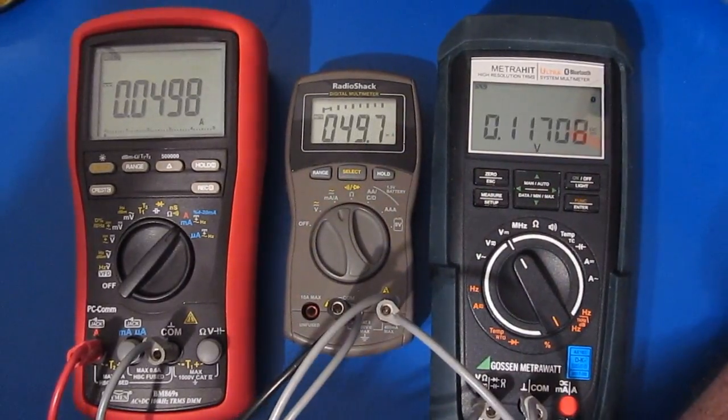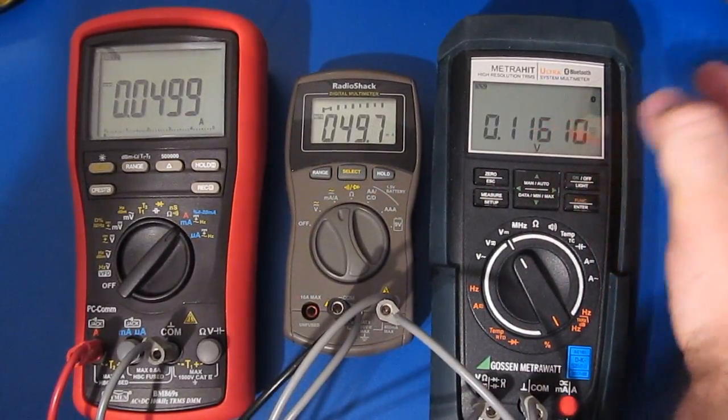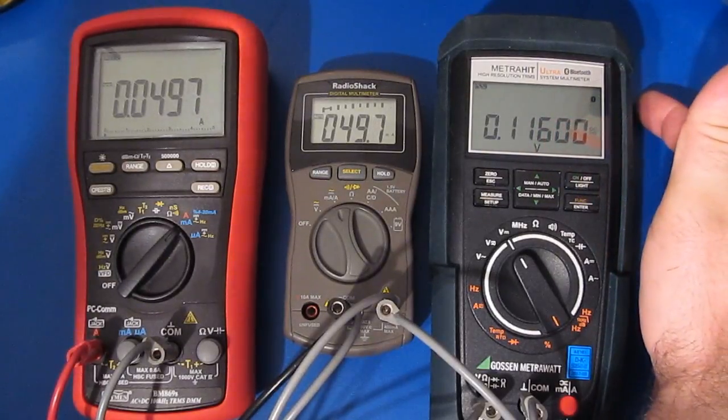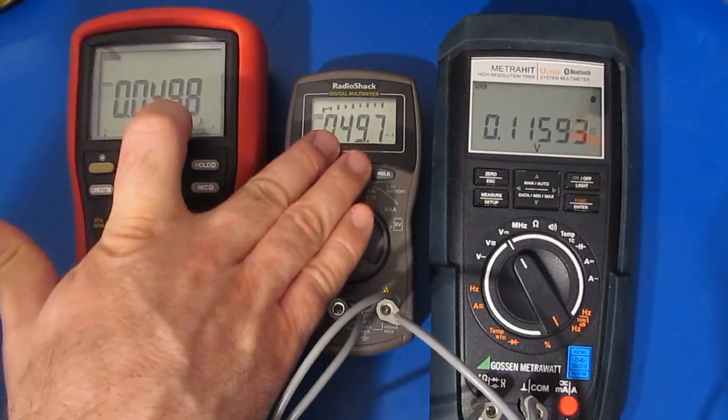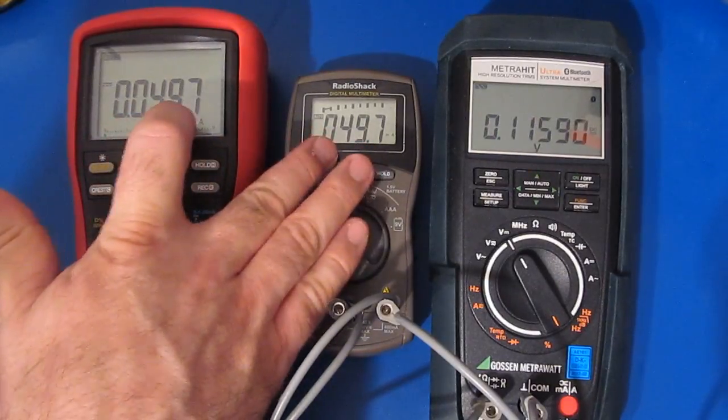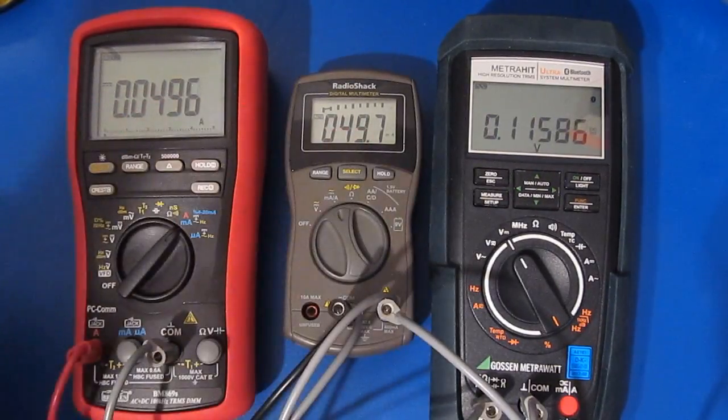The milliamp range. And we can see the voltage drop across the meter is now about 116 millivolts. We can see the Brymen as well as the RadioShack are reading basically the same current. Both roughly 50 milliamps.